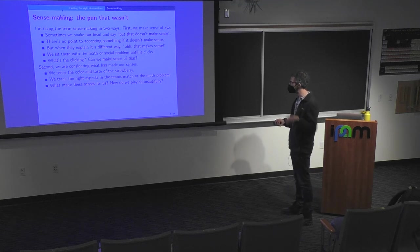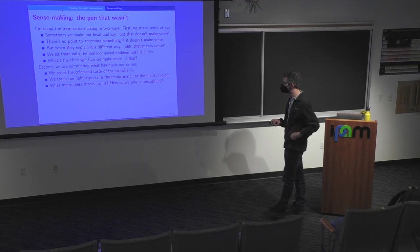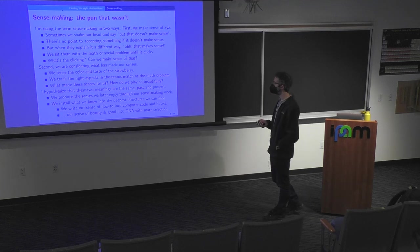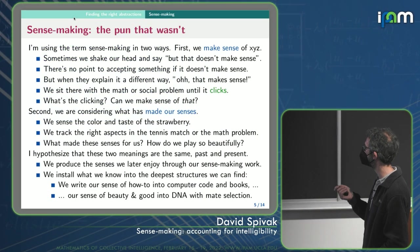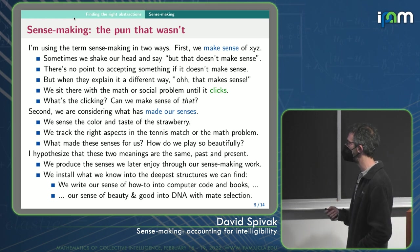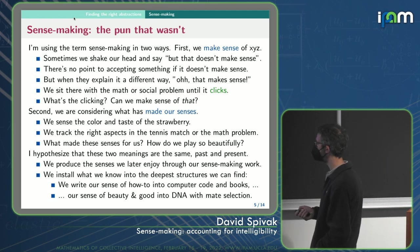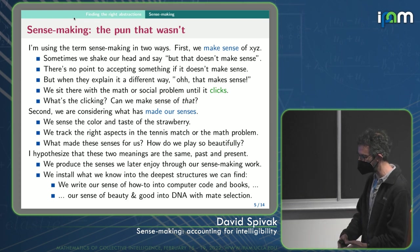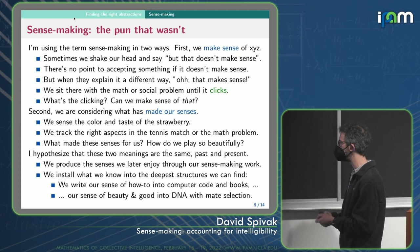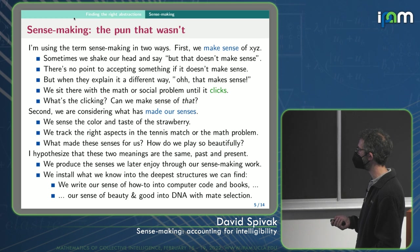And so how do we play so beautifully? So I'm hypothesizing here that these two meanings are the same, that this is past and present, that we produce the senses that we later enjoy or our progeny enjoys through sense-making work. Now, of course, they would be doing it in a way that was different than a human feels when they're making sense. But I'm asking the question, is it possible that sense-making is the production of sense?